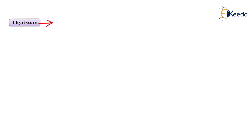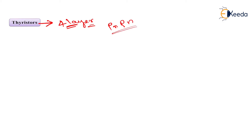Now what do we mean by thyristors? Thyristors are nothing but four-layer devices. In the introductory part, a diode is a two-layer device with only a PN structure, and transistors are three-layer devices, that is PNP or NPN combinations. Now thyristors are called four-layer devices, meaning they have four layers of semiconductor materials, so sometimes we call it a PNPN structure. That is why thyristors are also called four-layer devices.